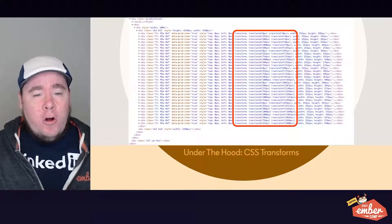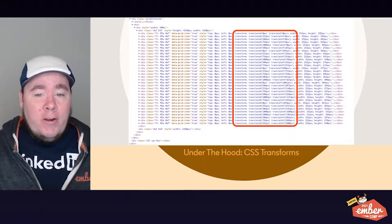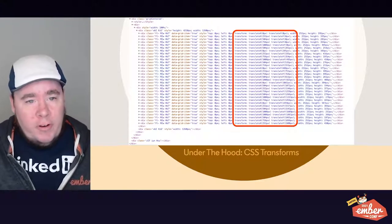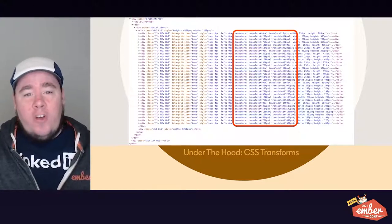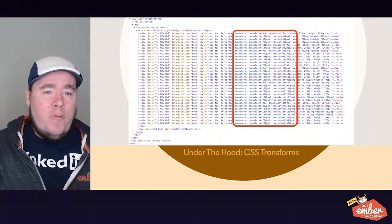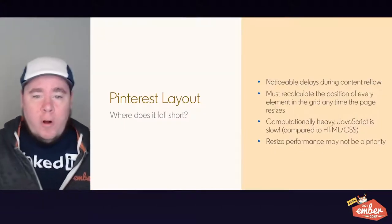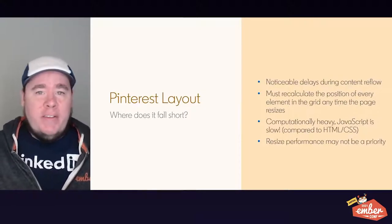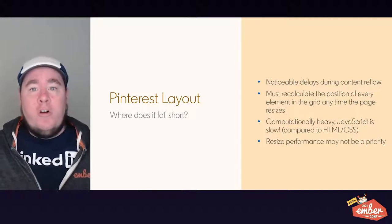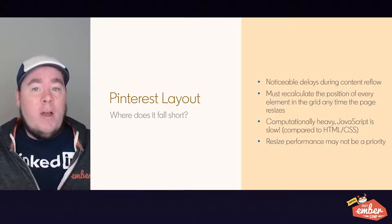Let's look under the hood to understand how Pinterest accomplishes this. Pinterest does their grid layout via explicit CSS transforms. They look at the height and width of each item in their grid, then the overall height and width of the container, and they use JavaScript to calculate the exact position that each item needs to be. You can see that they've set explicit transforms to translate each item by a number of pixels along the X and Y axis. Where this comes up short is that they have noticeable delays in content reflow because they have to recalculate the position of every element every time the page resizes. This is a computationally heavy approach because JavaScript is slow compared to native HTML and CSS features.